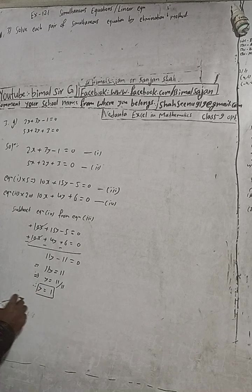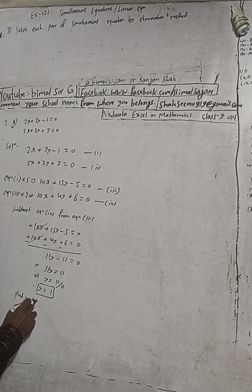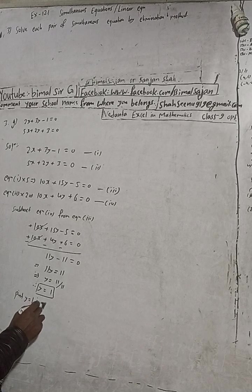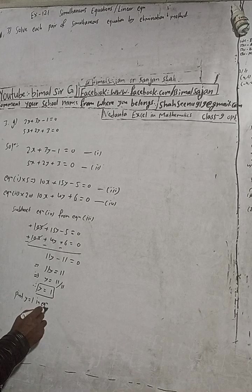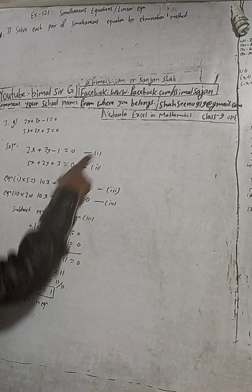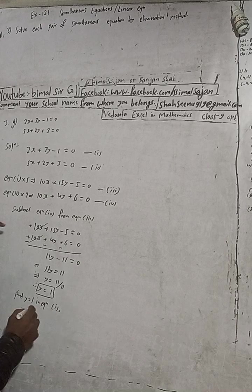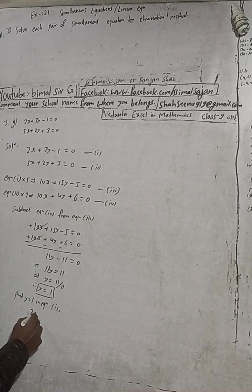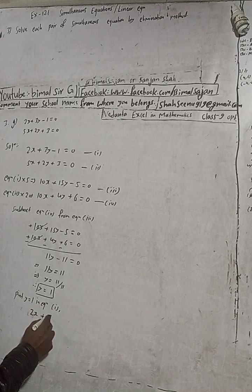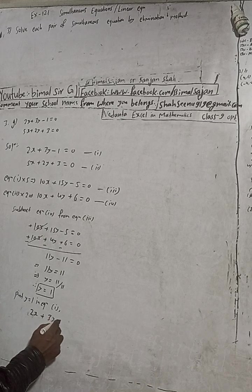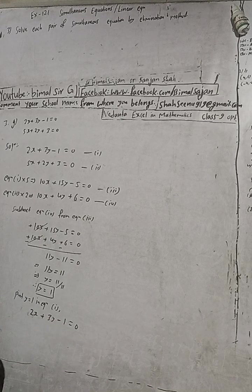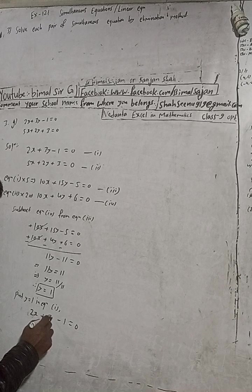Now put y is equal to 1 in equation. So here is 2x plus 3y minus 1 is equal to 0. In place of y, I will put 1, so put here 1 in bracket. 1 means multiply 1.